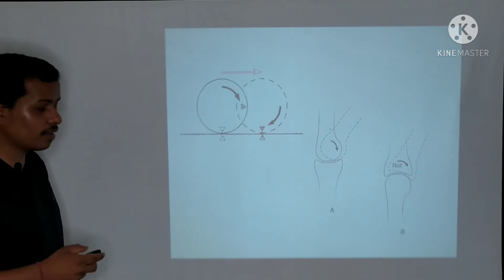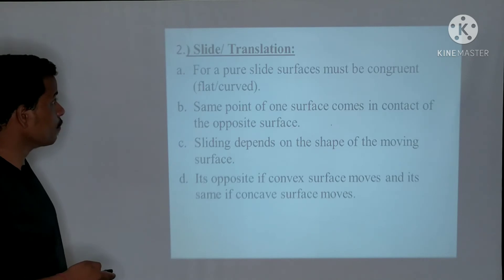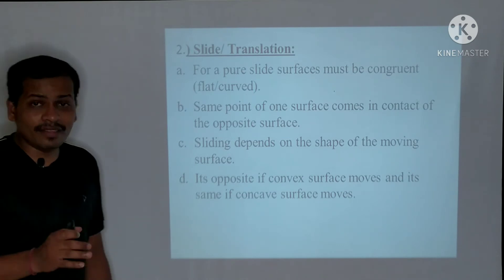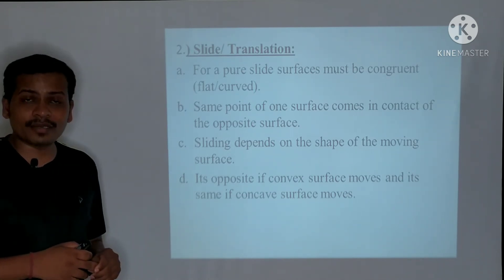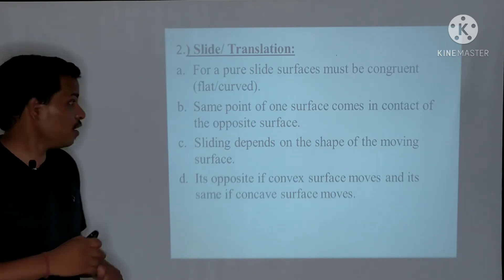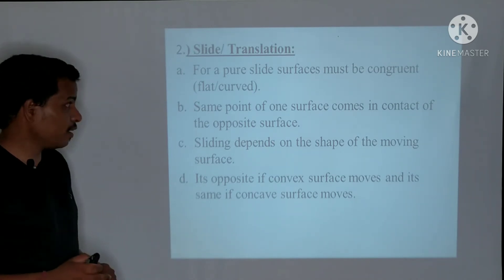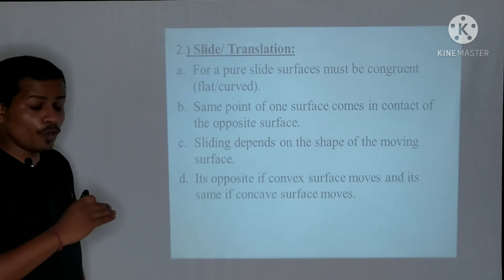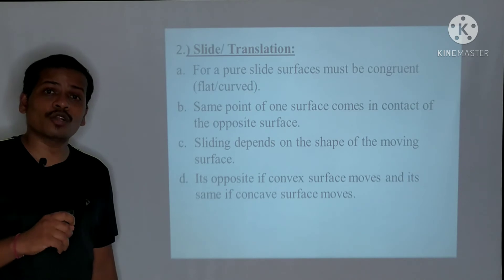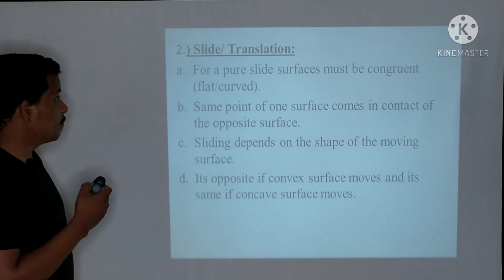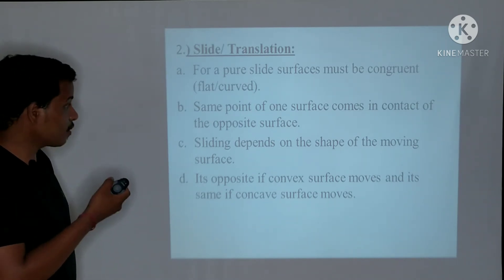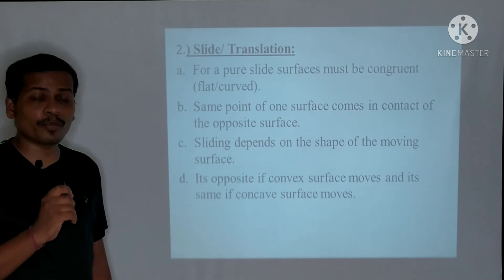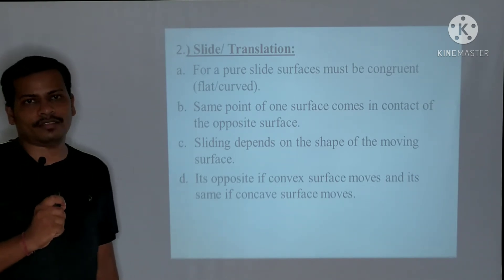In a slide (also called glide or translation), the same point on one surface comes into contact with new points on the opposite articular surface. This is a key difference between roll and slide. For a pure slide to occur, the surfaces must be congruent — whether flat or curved. The direction of slide depends on the shape of the moving articular surface.